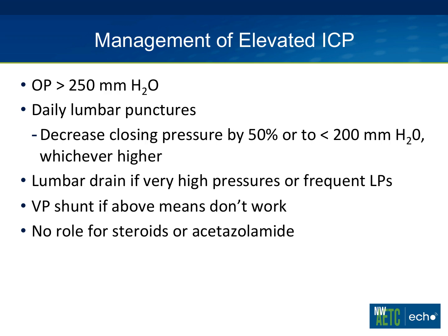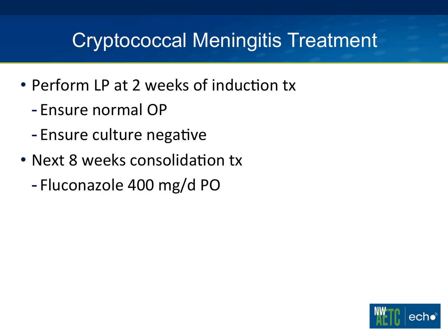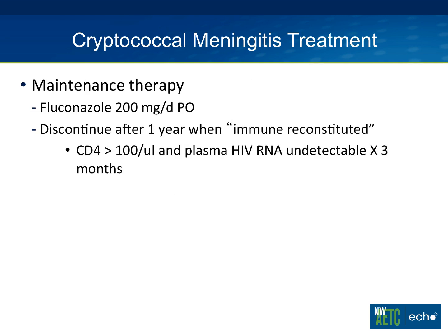You may need to perform more than one LP per day depending on how sick the patient is. After induction, perform an LP at two weeks to confirm normal opening pressure and negative culture. If both are true, move to consolidation therapy with fluconazole 400 mg/day for eight weeks, then maintenance at 200 mg/day for at least one year until immune reconstitution — defined as CD4 above 100 and undetectable plasma HIV for at least three months, or in some studies, CD4 above 200 and undetectable for six months.